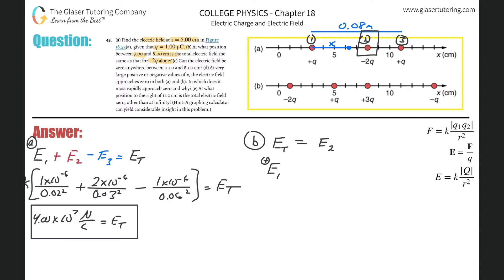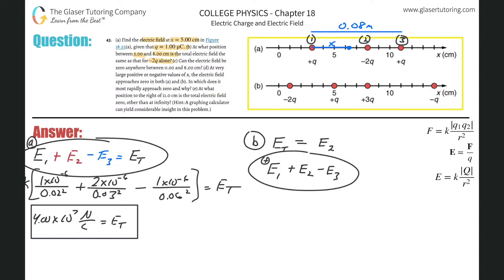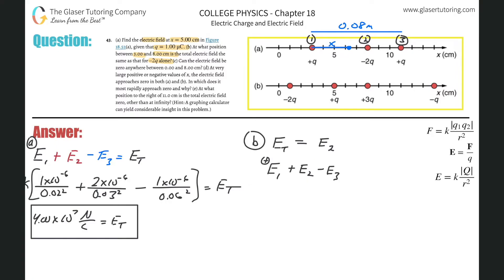Charge two is negative so its field points toward it — to the right — giving plus E2. Charge three is positive so its field emanates away to the left, giving minus E3. The setup: E1 + E2 − E3 = E2. This is exactly the same sign structure as part A.